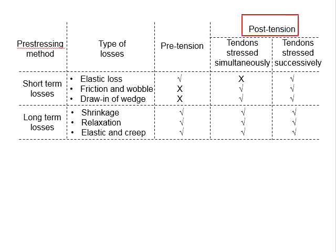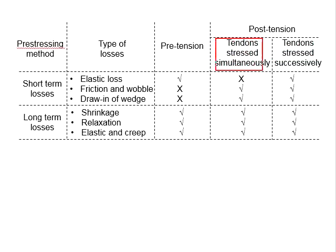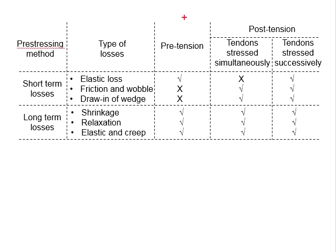Next, we look at the post-tensioning method. When all tendons are stressed simultaneously, there will be no elastic losses because the elastic losses are already compensated by the hydraulic jack during stressing. The member undergoes elastic shortening during the jacking operation, and this elastic shortening process is completed before the pre-stressing force is effectively transferred into the member. Therefore, there are no elastic losses.